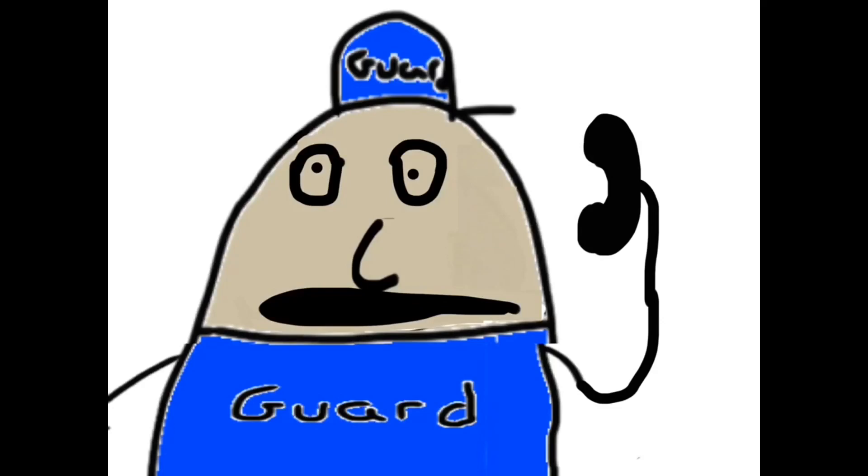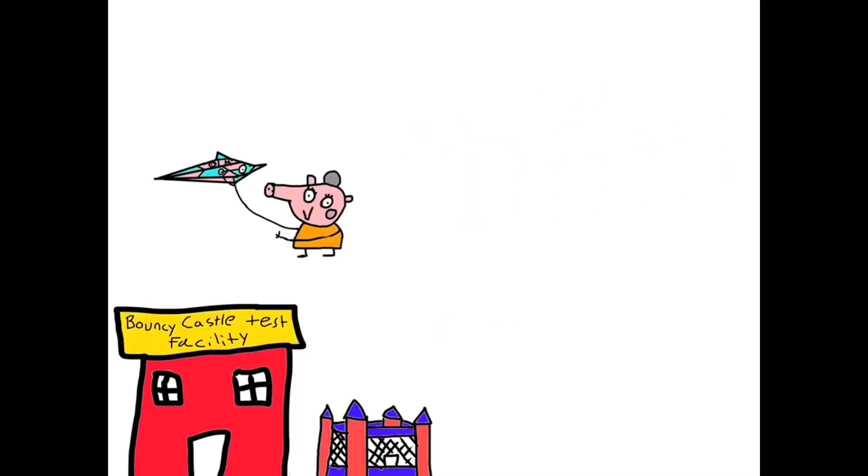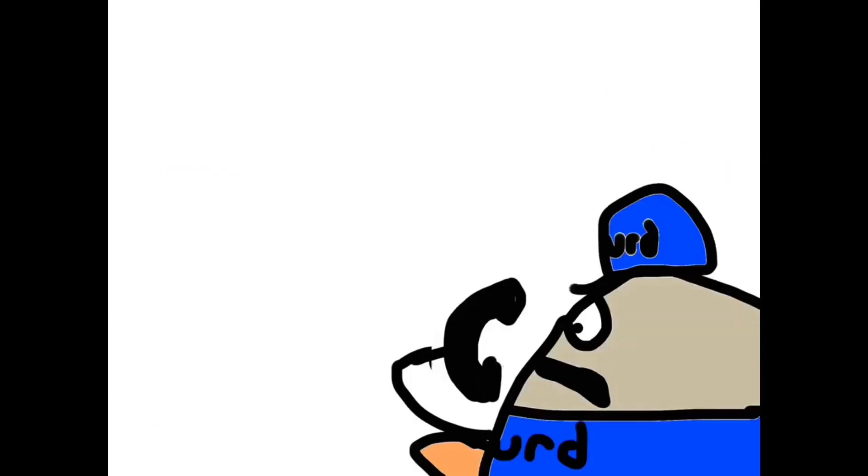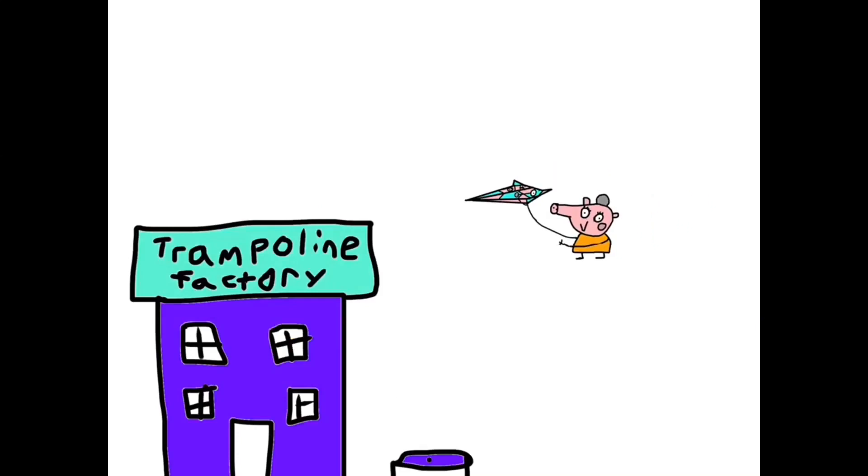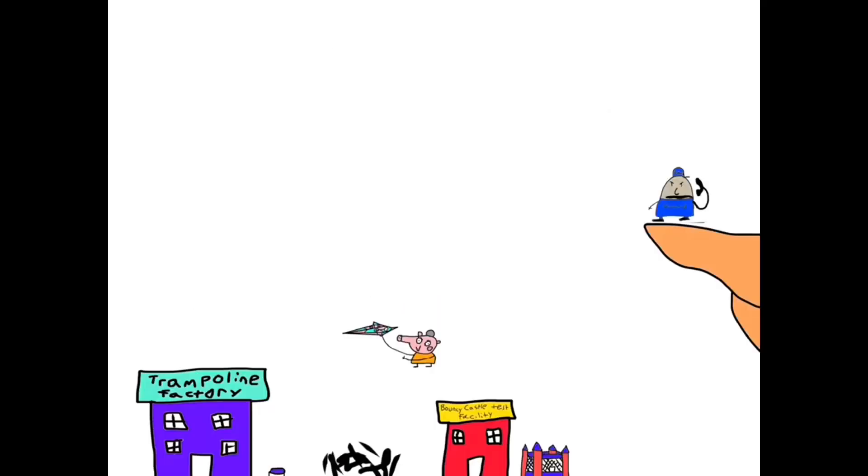Hello, police. Oh, Daddy Pig and Mummy Pig just escaped. Um, yeah, right now they're going toward the bouncy castle test facility. Wait, no, they're not going to, no. Never mind, they're going toward the trampoline factory. No, they didn't make that either. Actually, they landed right in between the two in an alleyway full of broken glass and rusty nails. Okay, never mind.